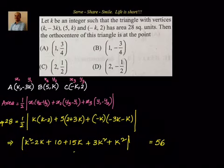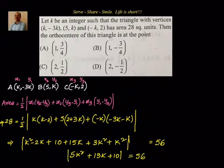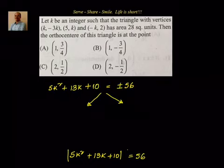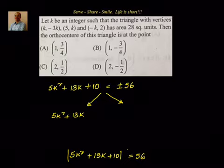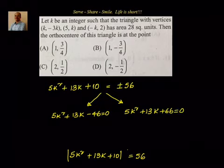We have 5k² + 13k + 10 equal to plus or minus 56. Taking the positive case gives 5k² + 13k - 46 = 0, and the negative case gives 5k² + 13k + 66 = 0. So we have two quadratic equations.